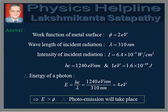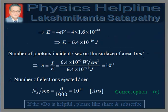We observe that E = 4 eV is greater than φ = 2 eV, therefore photo emission will take place. The energy of a photon E = 4 electron volts, which is equal to 6.4 × 10⁻¹⁹ joules.